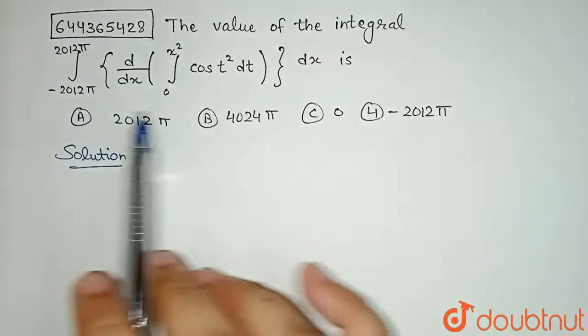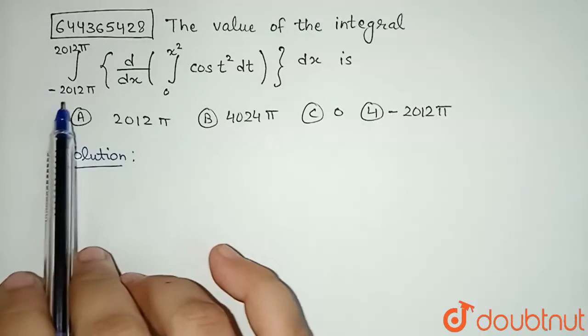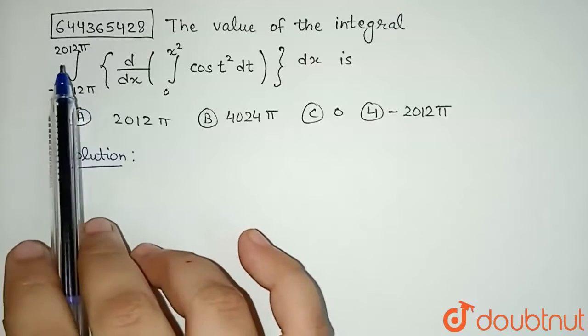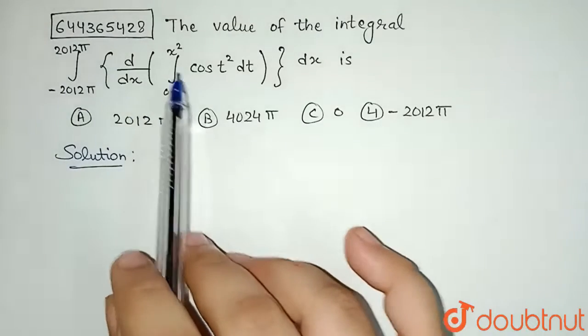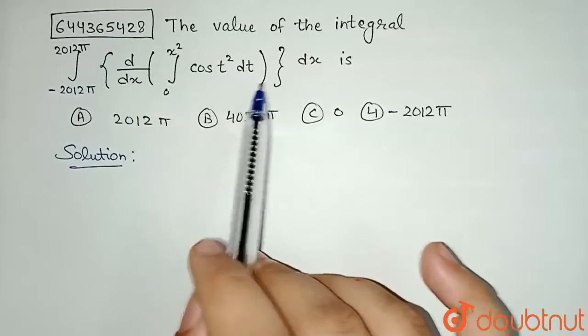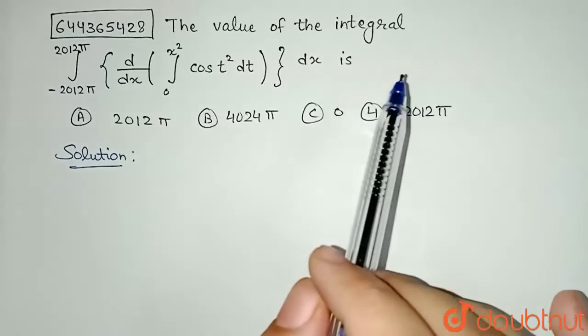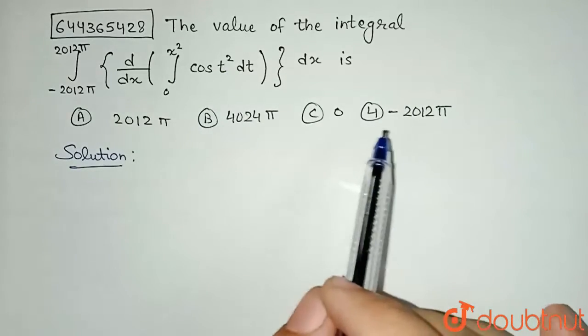The value of the integral from -2012π to 2012π of d/dx of integral from 0 to x² of cos(t²)dt with respect to dx is, and we are given four options. So I need to find the value of this integral here.